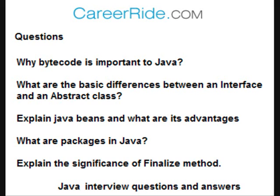Next question: explain Java Beans and what are its advantages? A Java Bean is a software component which can be used in a variety of environments. Advantages of beans are as follows: beans are written only once and can be used many times. Configuration settings of beans can be saved in persistent storage. We can control the exposure of properties, methods, and events of the bean. It can send and receive events from other objects.